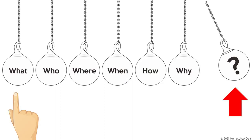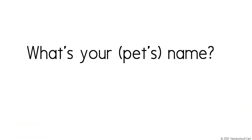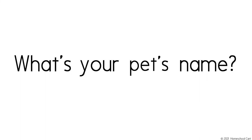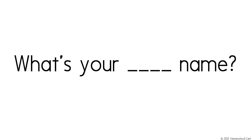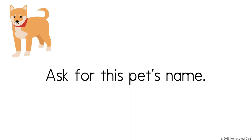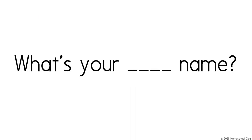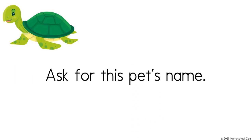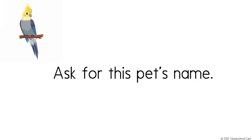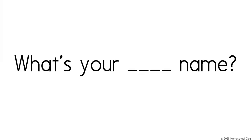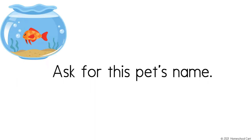It's time for another question. This time, we will use the question stem: what? What's your pet's name? We'll change it just a little bit and insert the animal in the question stem. What's your cat's name? Ask for this pet's name. What's your cat's name! Good! How about this pet? What's your dog's name? Ask for this pet's name. What's your turtle's name? Great! And this one? What's your parrot's name? You got it!